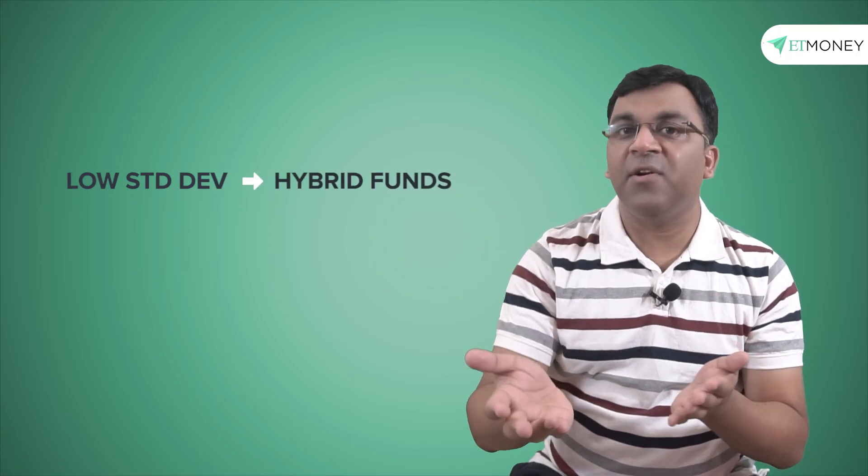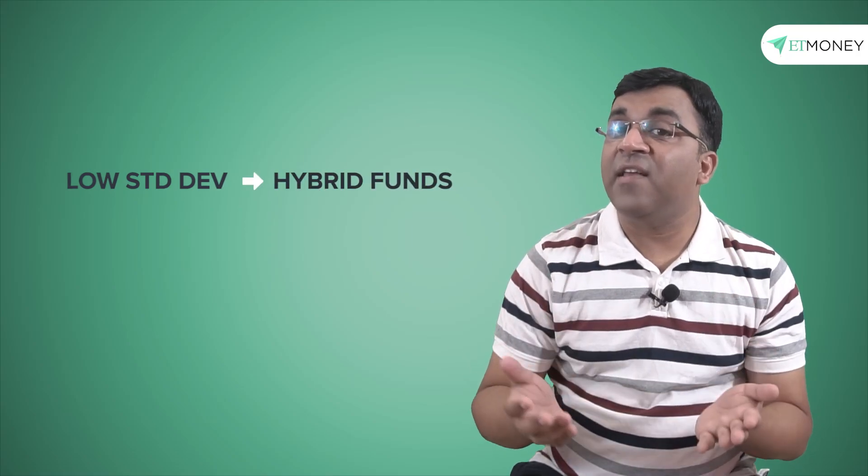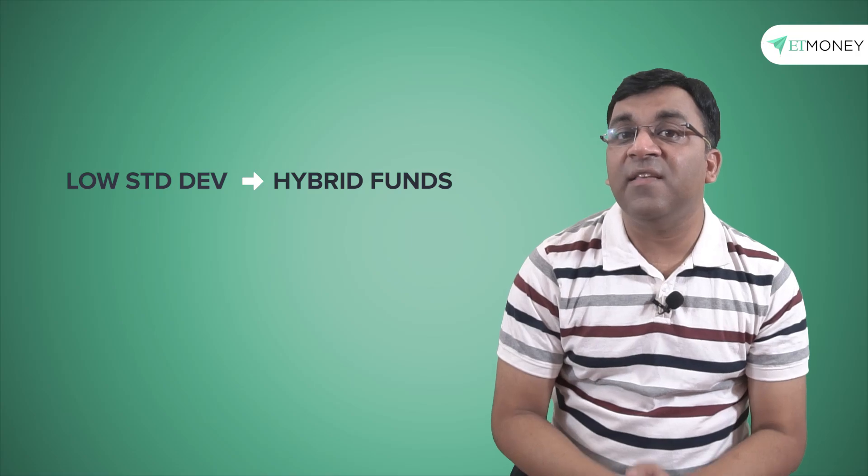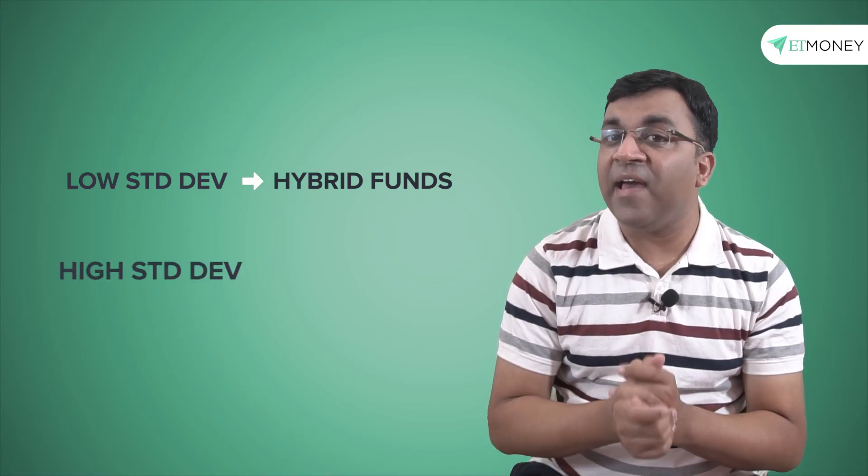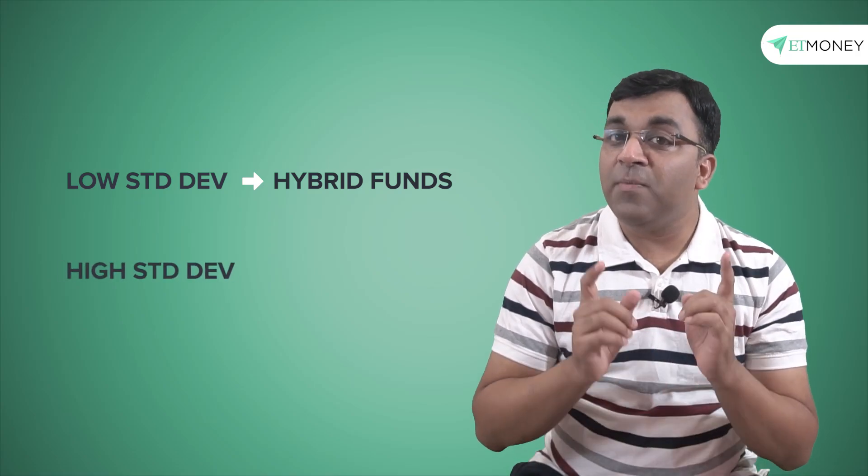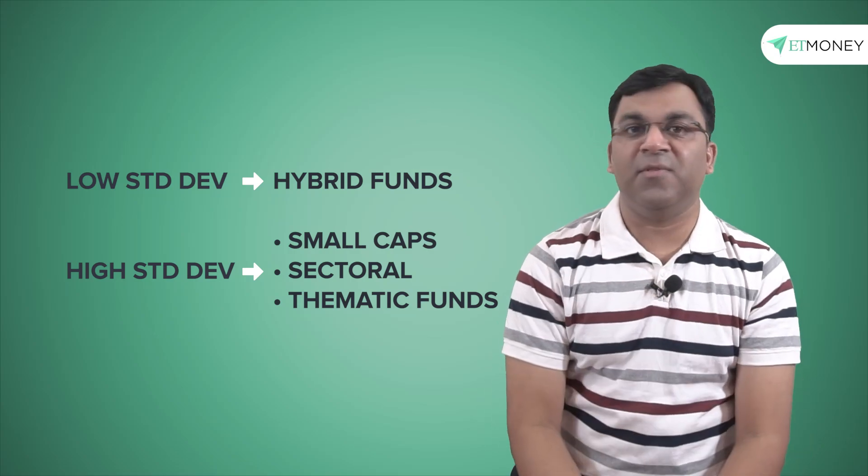In other words, your risk profile will determine how you view a fund's performance through the lens of the standard deviation. So if you prefer more predictable performance, then opt for funds with a low standard deviation like hybrid funds. But if you can fathom the ups and downs of volatility, then don't shy away from high standard deviation funds to make more alpha from your investments.